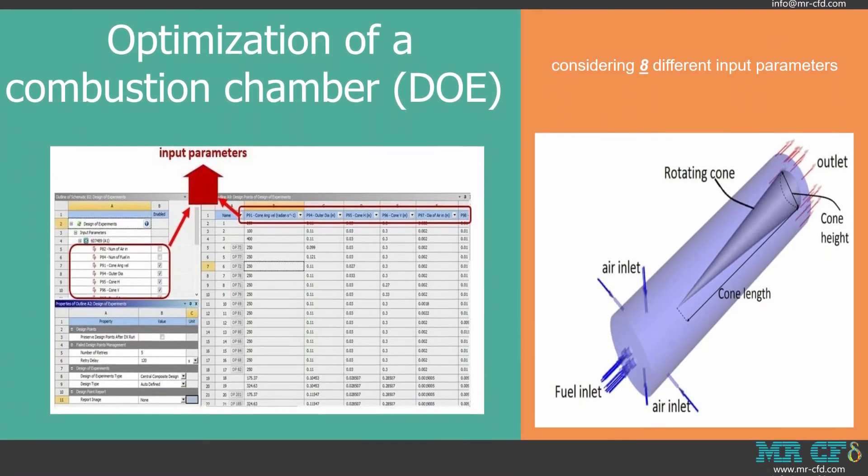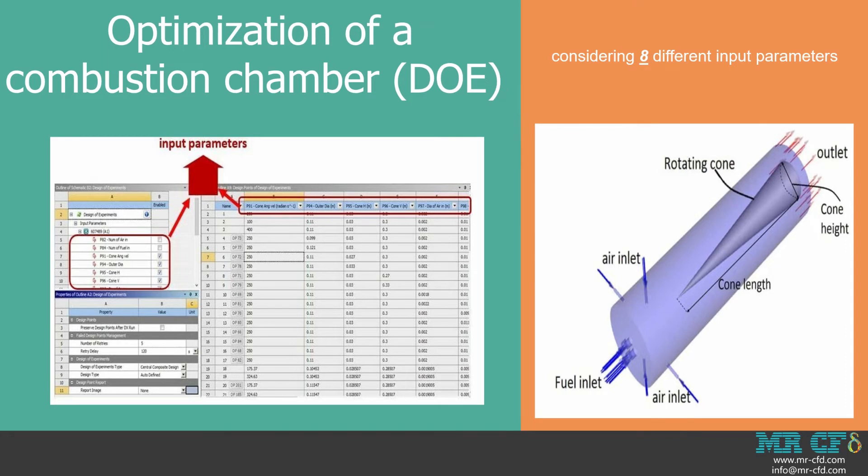For example, here we have created the DOE table needed for the optimization process of a combustion chamber considering eight different input parameters including air inlet diameter, fuel inlet diameter, outer diameter, and etc.